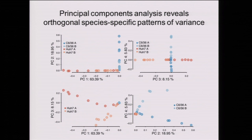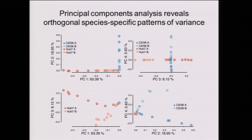Looking more broadly at what these populations are doing, we use principal components analysis to stratify them. From the wild-type origin, human-adapted populations move in one direction and mosquito populations move in an orthogonal direction. The first two components capture about 85% of the variance, and these are host-specific components. The third and fourth components, explaining about 15% of the data, show replicate populations diverging—indicating these evolutionary trajectories are very reproducible, at least in this simplified system.